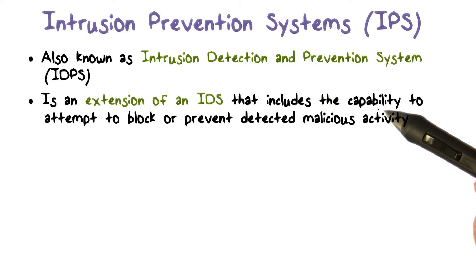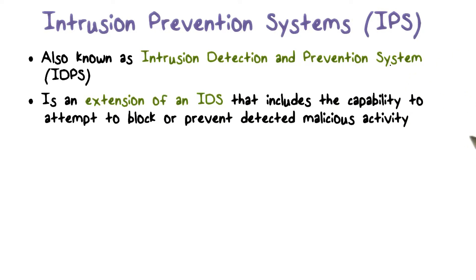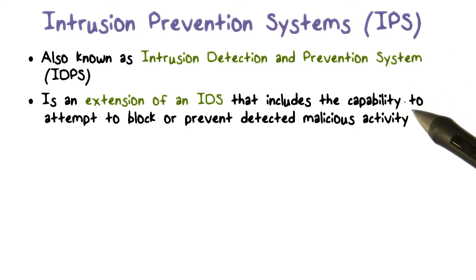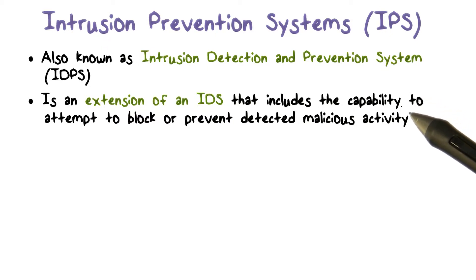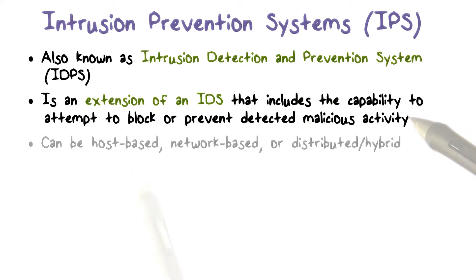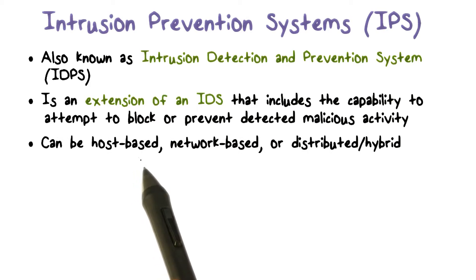Instead of simply sending alerts like an IDS, an IPS will try to block the attack when it detects malicious activities. For example, it can block network traffic that involves malicious activities.